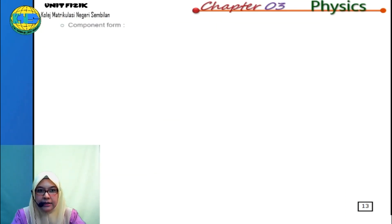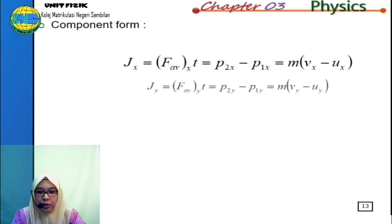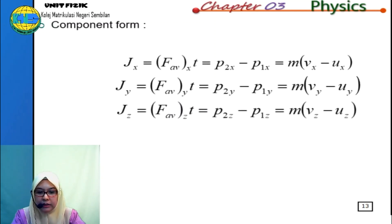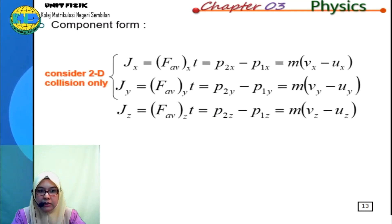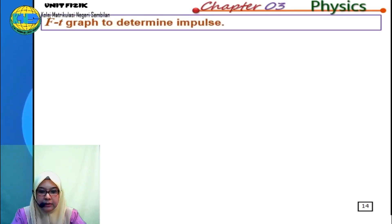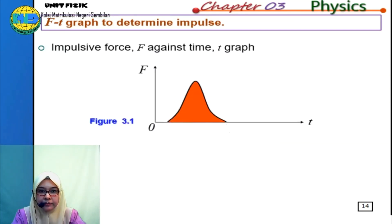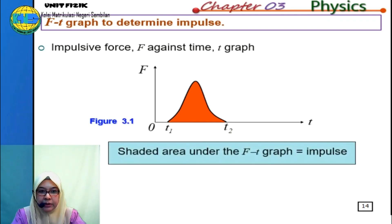Since impulse is a vector quantity, we can resolve it into x, y, and z components. However, in the matriculation syllabus, we only consider two-dimensional collisions. We can also use an F-T graph to determine impulse — the shaded area under the graph is equal to the impulse.